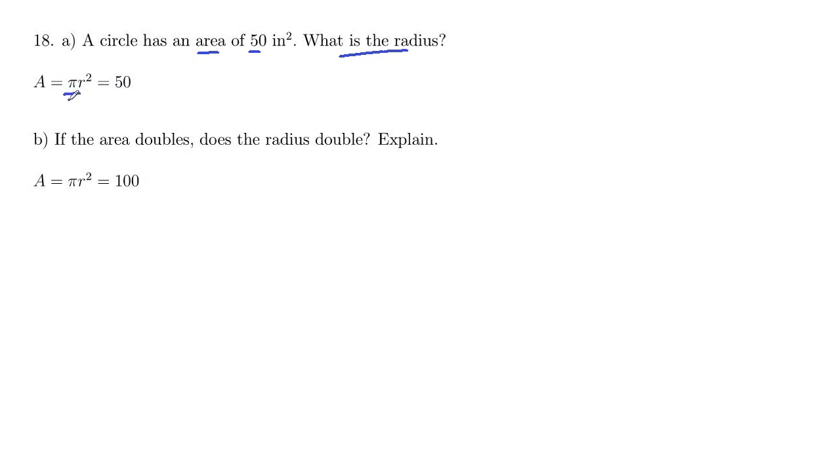So we first want to divide that pi off both sides. That will leave us with r squared on the left. The pi's cancel and 50 divided by pi on the right.